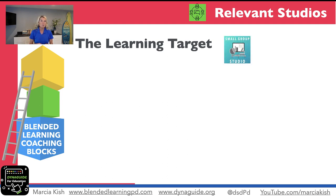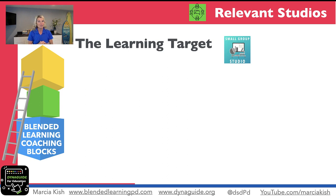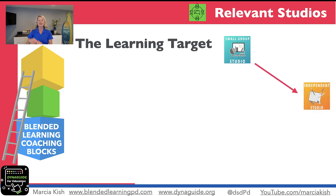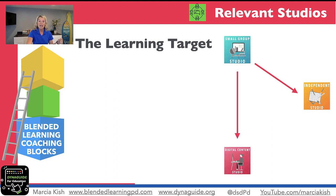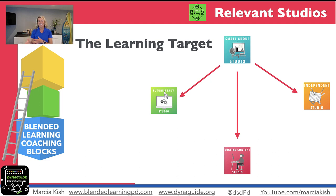We're going to start with our small group first — planning our small group first. What will we cover? What will they do? How are we going to differentiate? If you don't know what I'm talking about, go back to part three, where we talk about using data and I walk you through how to set up your small groups using the learning targets. From the small groups, we need to make sure that our independent practice is tying to the learning target. Then we want to make sure that digital content is tied to the learning target, and those hands-on activities are tied to the learning target. That way, when the students are working in the other studios, it's all interconnected.